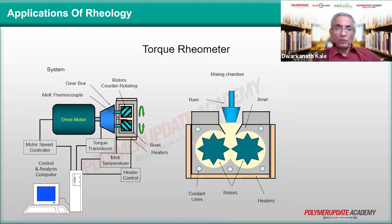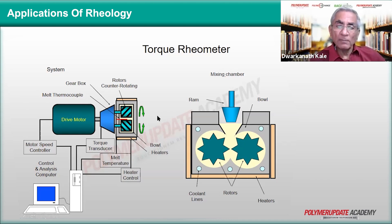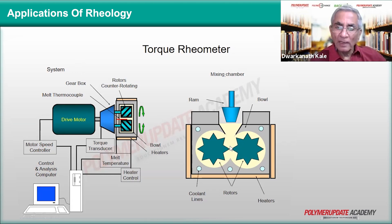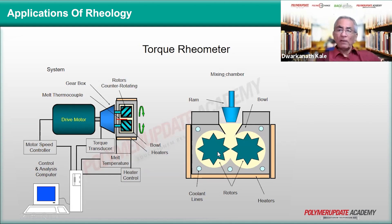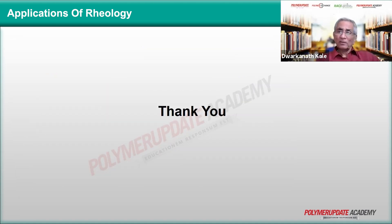The torque rheometer setup includes a drive motor, torque processor, and a batch mixer — the batch mixer can be detached and replaced with an extruder. When used as a batch mixer, the sample is added, the gap is closed, and the sample is allowed to melt and mix. During this time, variation of torque — which is connected to power — is measured as a function of speed and as a function of time for a given speed. I hope you have enjoyed this. Thank you very much.